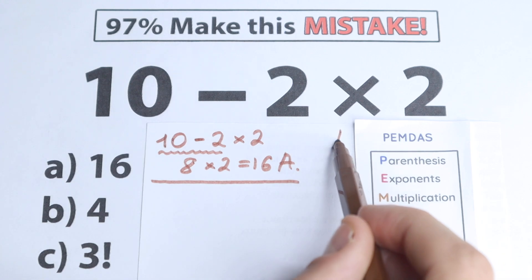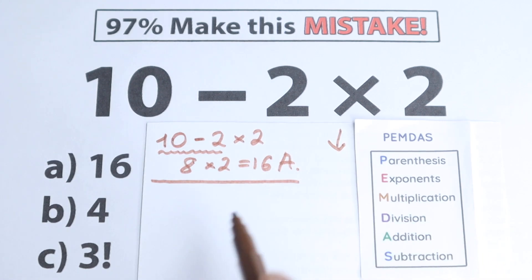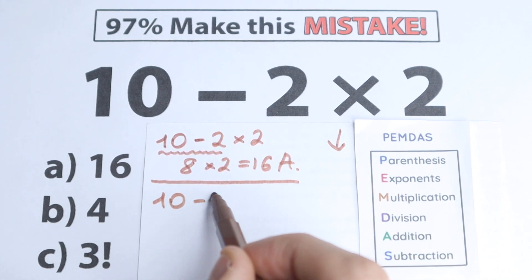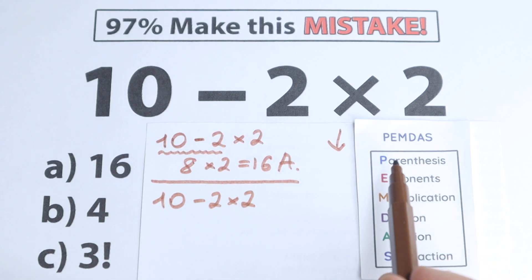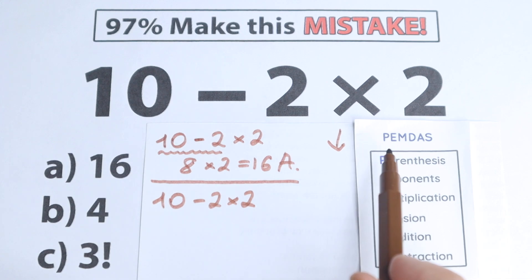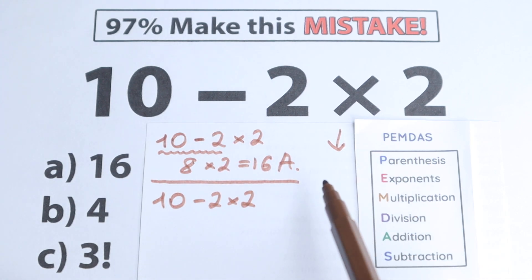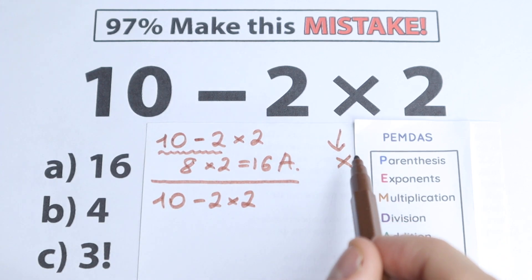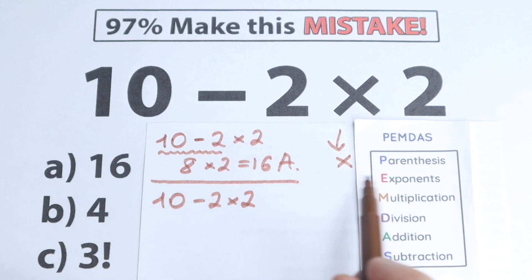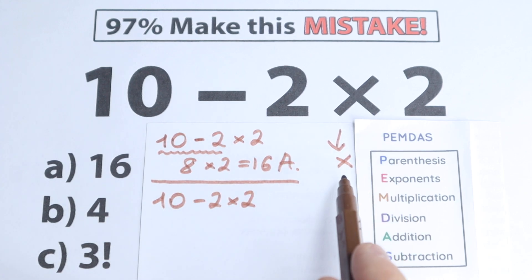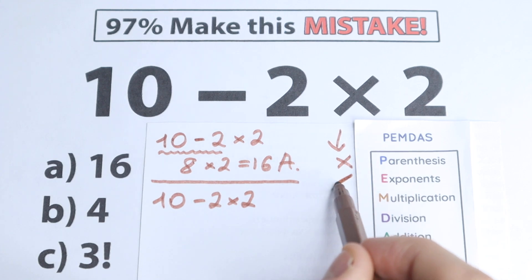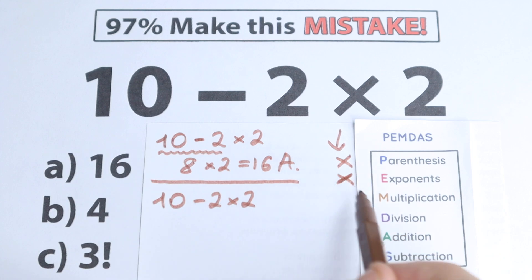PEMDAS works from the top to the bottom — this is the first important rule. Let's solve 10 minus 2 times 2 according to PEMDAS. The first step is parentheses. We don't have any parentheses or brackets here, so we skip this part. The next step is exponents — we don't have any powers here either, so we skip this step as well. We've already skipped these two parts.